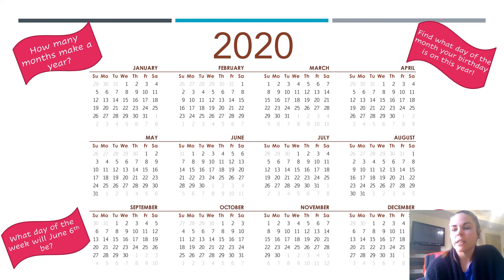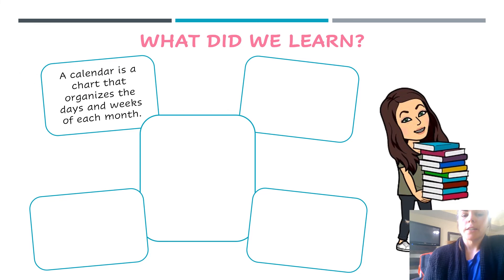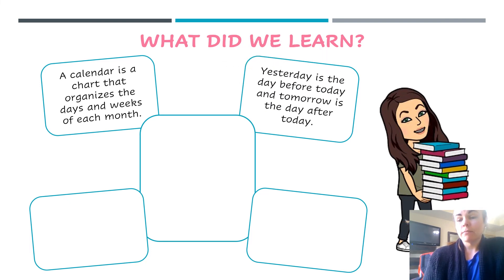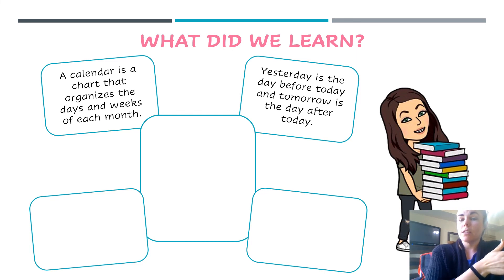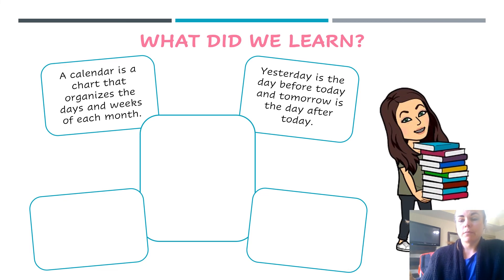So that is the basics of reading a calendar. Let's go back and go over real quick what we learned today. A calendar is a chart that organizes days and weeks of each month. Yesterday is the day before today — the current day that you're in. On a calendar, you would jump backwards one to figure out what yesterday was. And tomorrow is the day after today, so on a calendar you would jump forward one time to figure out tomorrow.